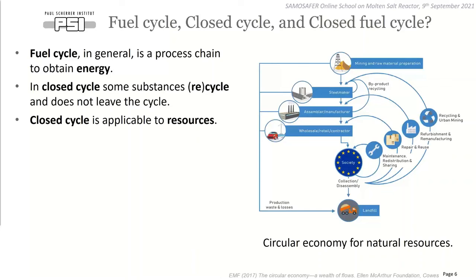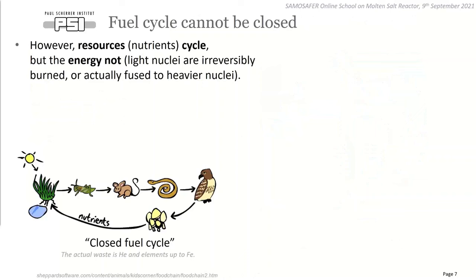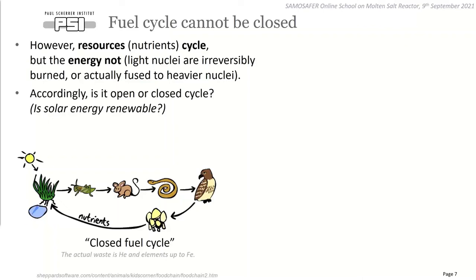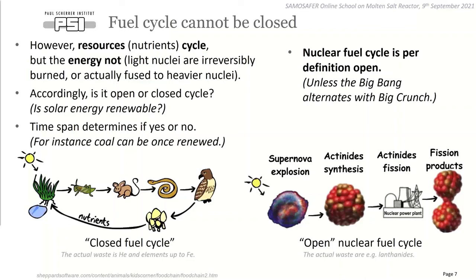You can combine fuel cycle and closed cycle — using a nature example, where nutrients cycle but energy is not really cycling (it's provided by fusion in the sun). So is the cycle closed or open? It's the same question as whether solar energy is renewable. The answer depends on time span — coal can be renewed but the timescale makes it uninteresting. From this perspective, a nuclear fuel cycle is definitely open — nothing can close it. But the fuel itself, the actinides, can cycle until they are fissioned — this is what we mean by closed cycle: cycling of actinides.